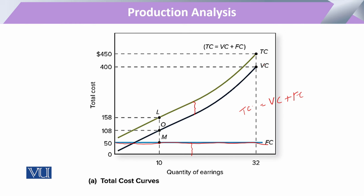At certain points, if we draw a perpendicular at point L, we can see that when 10 units of output are produced, the fixed cost is equal to 50 and the variable cost is equal to 108. For any point on the graph, we can similarly draw the fixed cost, the variable cost, and then derive the total cost curve. On the same graph, we can depict the maximum point of the total cost curve and the maximum point of the variable cost curve.